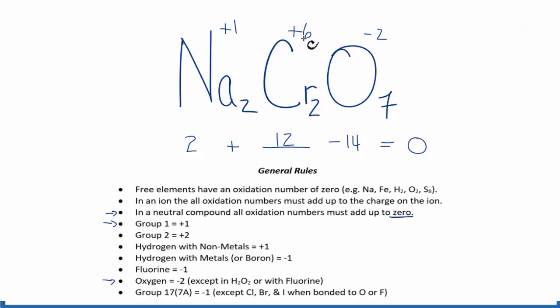So 2 times plus 6, that gives us the 12, 2 times the 1, there's the 2. They add up to zero. So to recap,